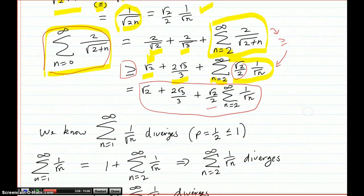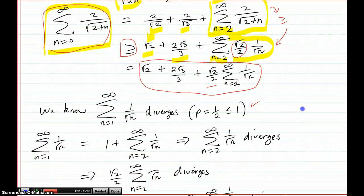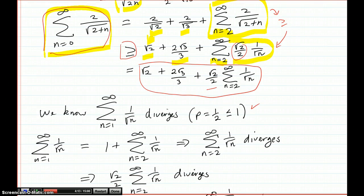Now we already know that 1 over the square root of n from 1 to infinity diverges. Because the exponent on the n is a half, and a half is less than or equal to 1. So that's known. So all I have to do is maneuver my 1 over the square root of n, 1 to infinity, to burn off one term and start it here at 2, so that everything will match up.